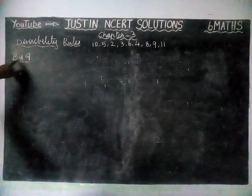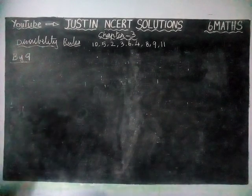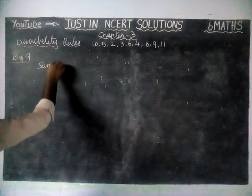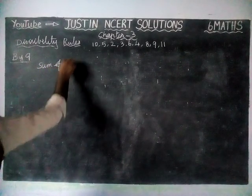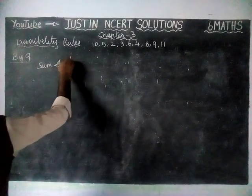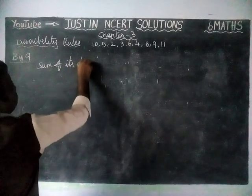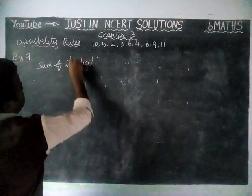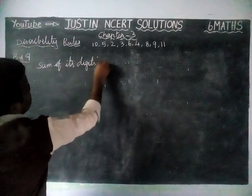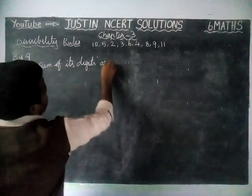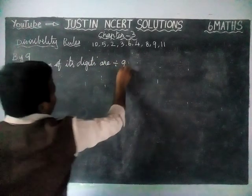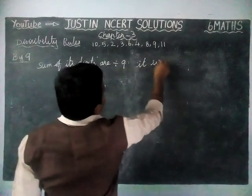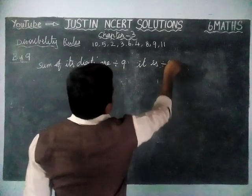First one, divisibility by 9. If the sum of its digits is divisible by 9, then the number is divisible by 9.